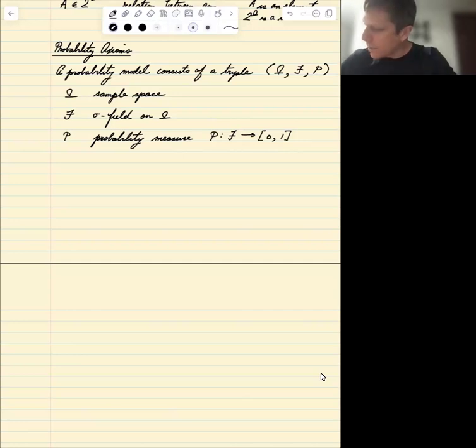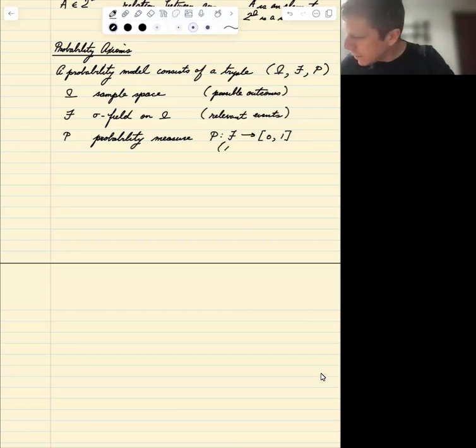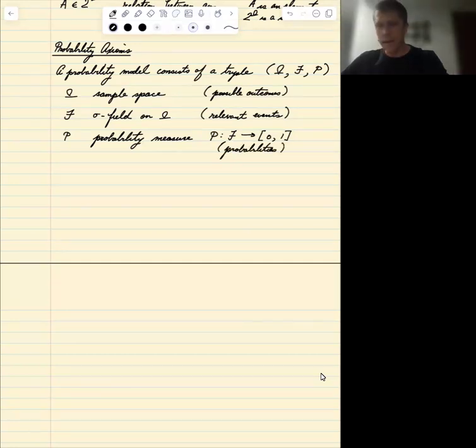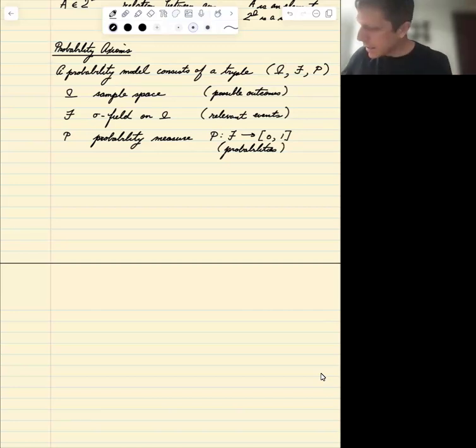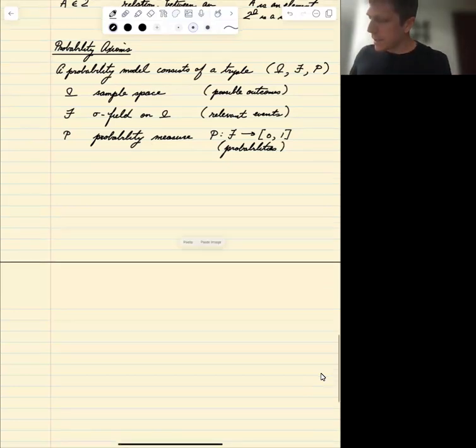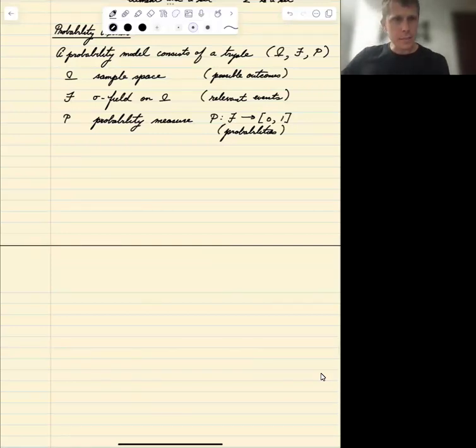P is a function from F to [0,1]. It assigns probabilities to every possible event. So sample space, this is the set of all possible outcomes.